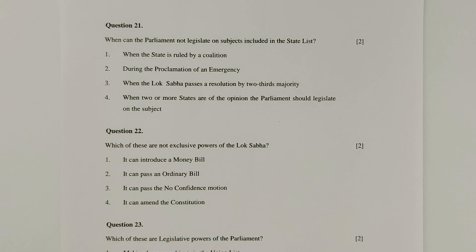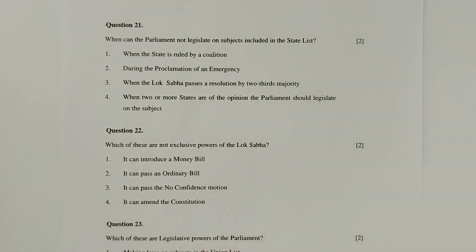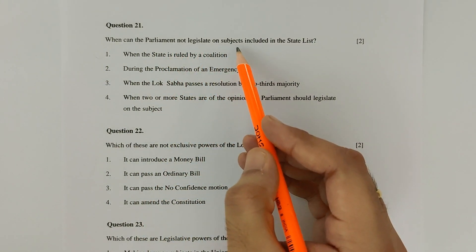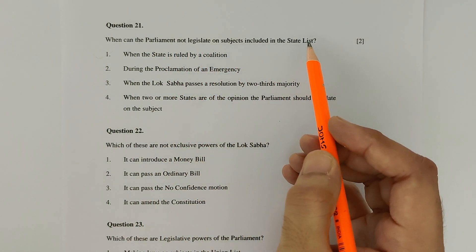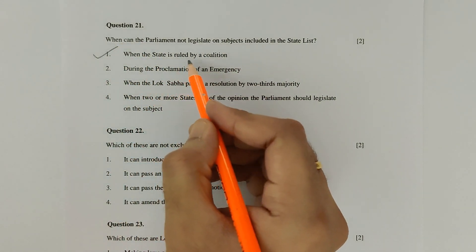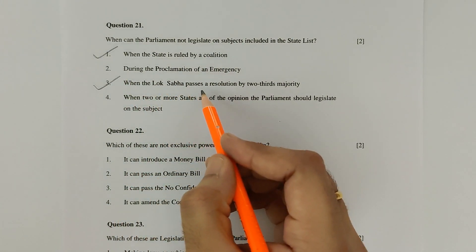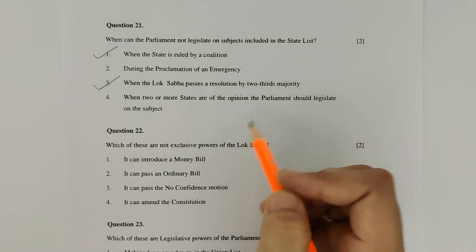Before beginning Part 2, note that in the specimen paper no instructions were given for Part 2 questions. However, all Part 2 questions appear to have 2 correct options each, since each question is worth 2 marks. Question 21: When can Parliament not legislate on subjects in the State List? Option 1 — when the state is ruled by a coalition — and option 3 — when the Lok Sabha passes a resolution by a two-thirds majority — are both correct.